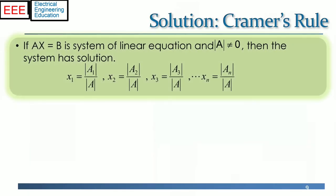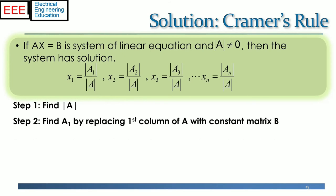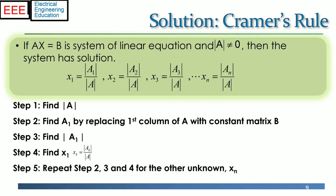Another method to find the solution of system of linear equations with as many equations as unknowns is Cramer's rule, which is valid whenever the system has a unique solution and the coefficient matrix is non-singular. For a system Ax = b, it expresses the solution in terms of the determinants of the square coefficient matrix A and of matrices Ak obtained from A by replacing the k-th column of A by the column vector b. This is a 5-step method: Step 1, find the determinant of coefficient matrix A; Step 2, find A1 by replacing the first column of A with constant matrix b; Step 3, find the determinant of A1; Step 4, find x1 by dividing the determinant of A1 by the determinant of A; Step 5, repeat steps 2, 3 and 4 for the other unknowns xk.